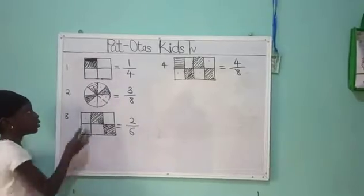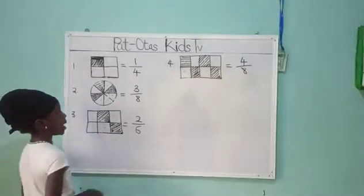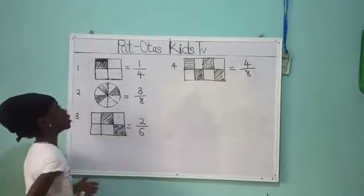1, 2, 3, 4. This square has 4 parts. That's how we got this 4 for the denominator.